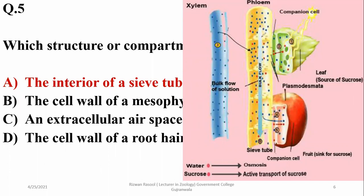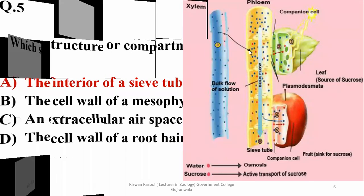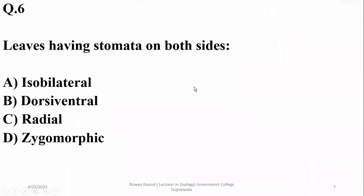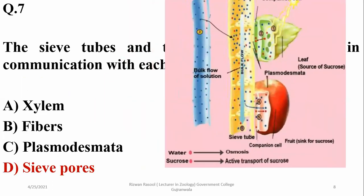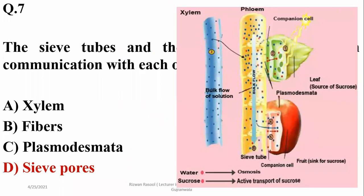Sieve tube cells are also connected with companion cells in the surrounding areas. Leaves having stomata on both sides are known as isobilateral leaves, while those having stomata on the lower side only are known as dorsiventral. The sieve tubes and companion cells communicate with each other via sieve pores, which are cytoplasmic connections and special types of plasmodesmata, also known as sieve plates.